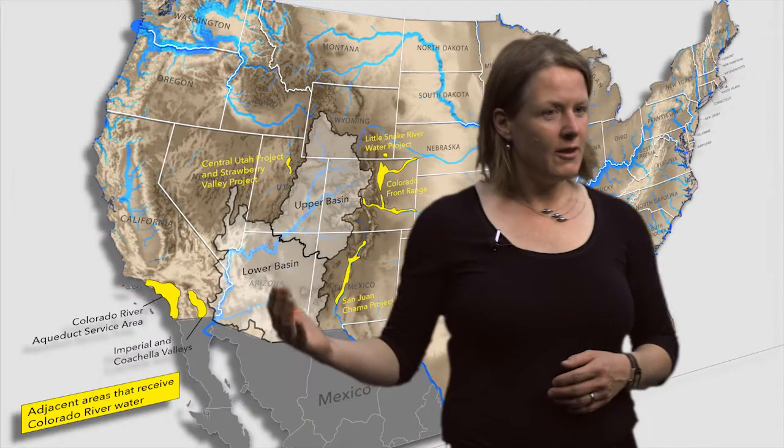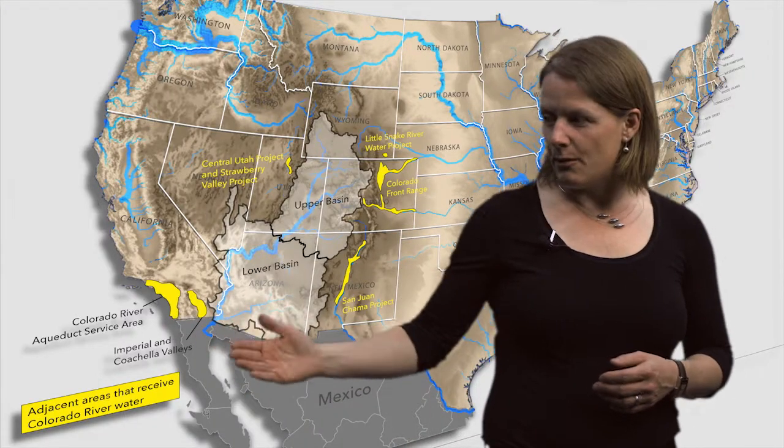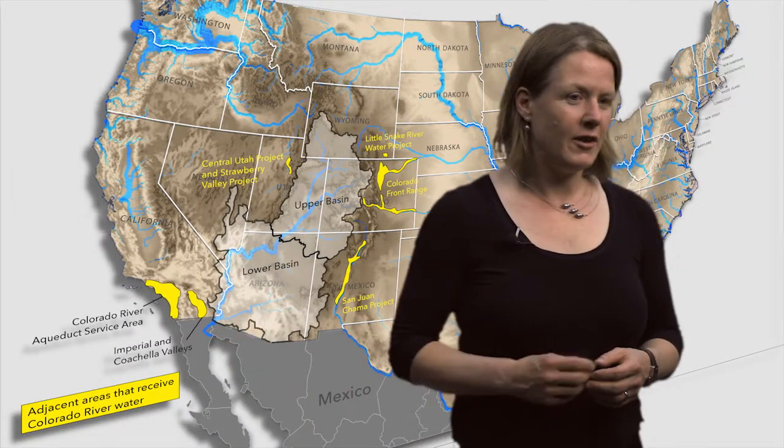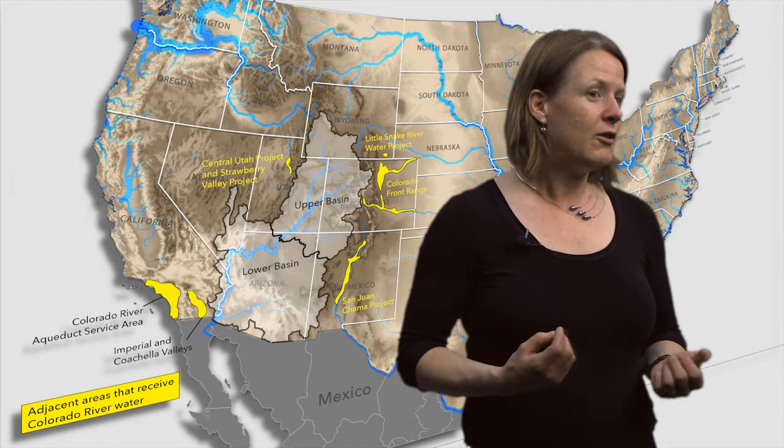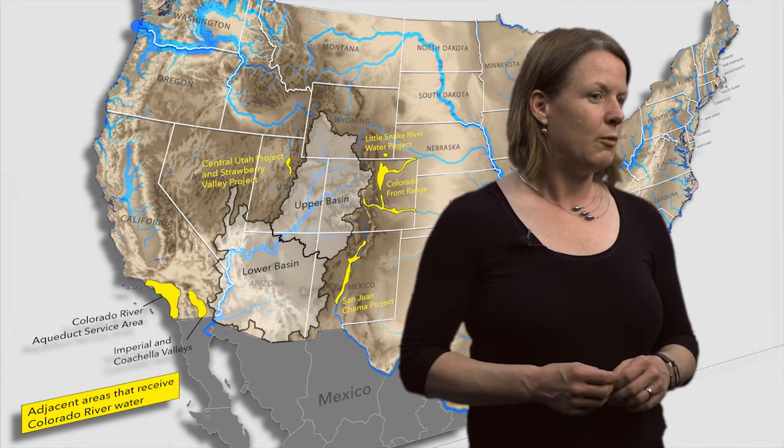Note on this map the yellow highlights — these are urban and agricultural areas outside of the basin that receive Colorado River water. In addition, the river serves about 2.3 million people and about 500,000 acres of farmland in Mexico once it crosses the international border.